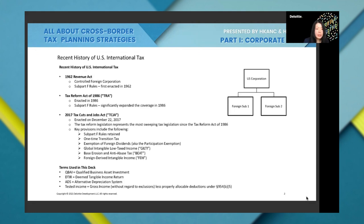TCJA also introduced another key provision: GILTI, or Global Intangible Low-Tax Income. Going back to the example — foreign sub one generates Subpart F income, foreign sub two generates non-Subpart F income. Starting from calendar year 2018 after the one-time transition tax, earnings by foreign sub two would be taxed currently in the U.S. under GILTI. Another key provision impacting U.S. multinationals is Foreign Derived Intangible Income, or FDII, which I will explain with an example in the next couple of pages.